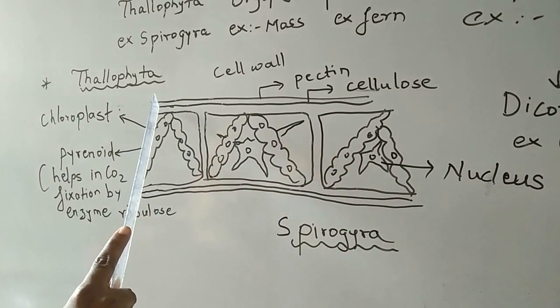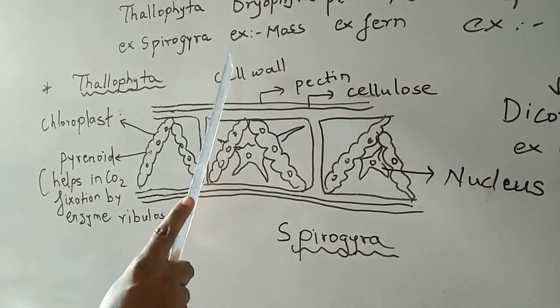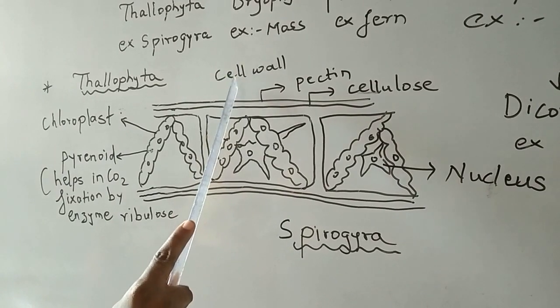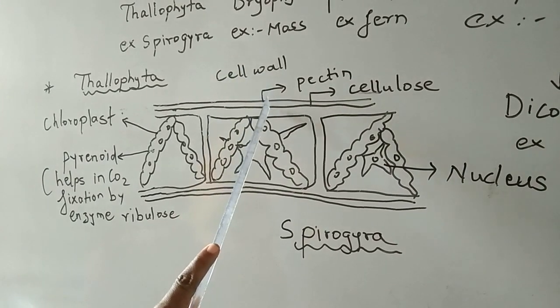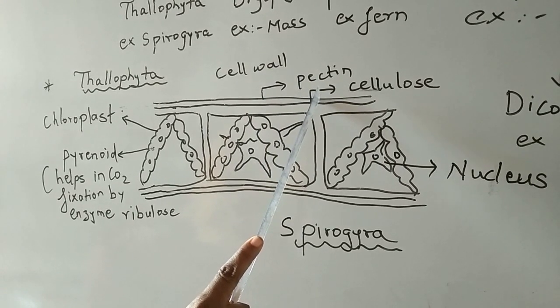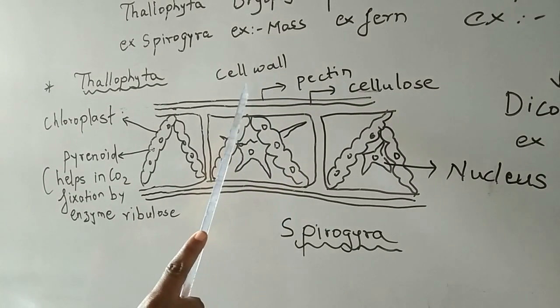The outer part of the Spirogyra is called as a cell wall. The function of cell wall is to give protection. The cell wall has two layers: the first layer is pectin and the second layer is cellulose.